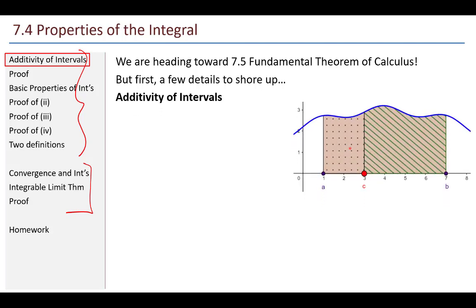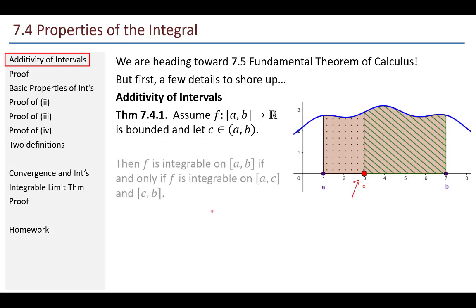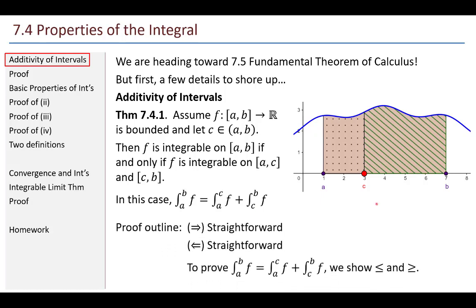The first big property is additivity of intervals. Assume f is a function from [a, b] to the real numbers, bounded, and let c be some element between a and b. Then f is integrable on [a, b] if and only if it is integrable on [a, c] and [c, b]. And if it is, the integral from a to b of f equals the integral from a to c plus the integral from c to b. The proof has an if-and-only-if part and an equation part proved by showing inequality in both directions.